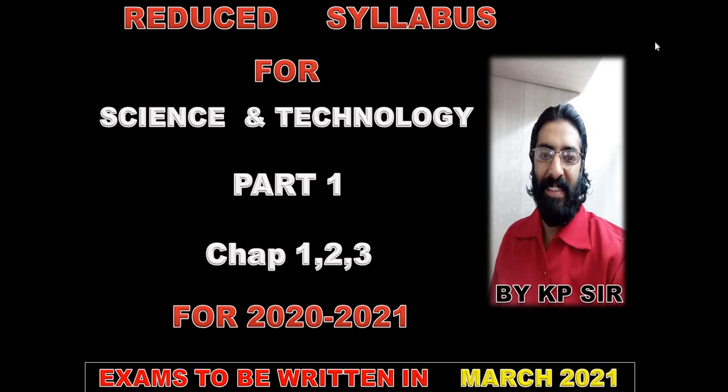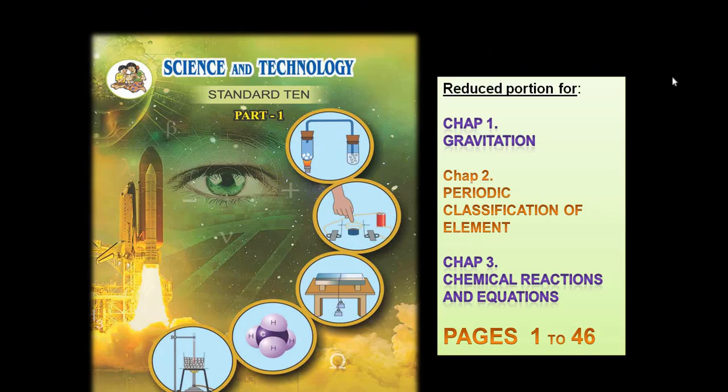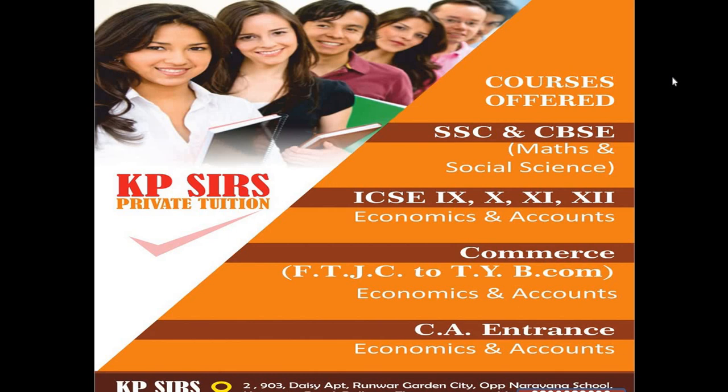So we are going to learn Chapter 1: Gravitation, Chapter 2: Periodic Classification of Elements, and Chapter 3: Chemical Reactions and Equations. In this video, I'm going to present to you the reduced syllabus from page number 1 to page number 46 of your Science 1 textbook. And I've already told you, please subscribe, like, and share KP Sir The Tutor. I also take private tuitions for Economics and Accounts up to CA entrance and CA inter.